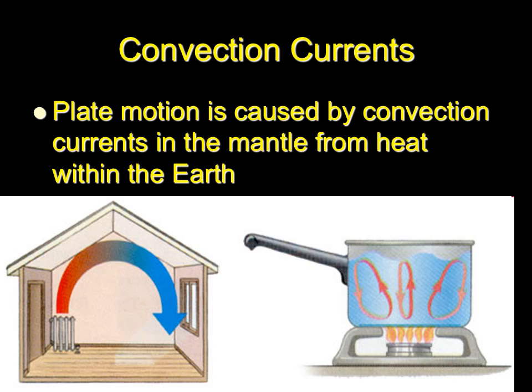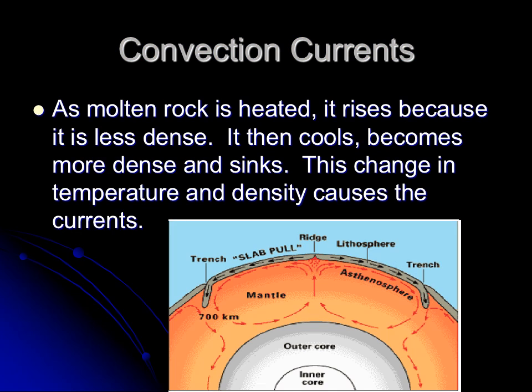If you look at where the flame is, that's where the water is hottest, and hot things rise. As you move away from the flame, the water is cooler, and cold things are heavier because the molecules in cold water are packed tighter, making it heavier, so it sinks. That rising and sinking creates little currents — which makes the bubbles in a boiling pot of water.